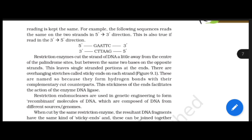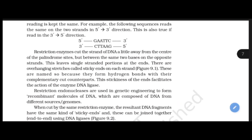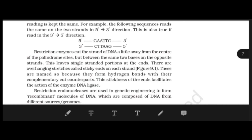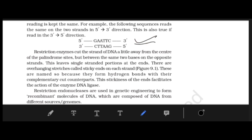For example, reading 5' to 3' on the top strand: GAATTC. Reading 5' to 3' on the bottom strand also gives: GAATTC. This is what a palindromic DNA sequence means — both strands read the same in the 5' to 3' direction.